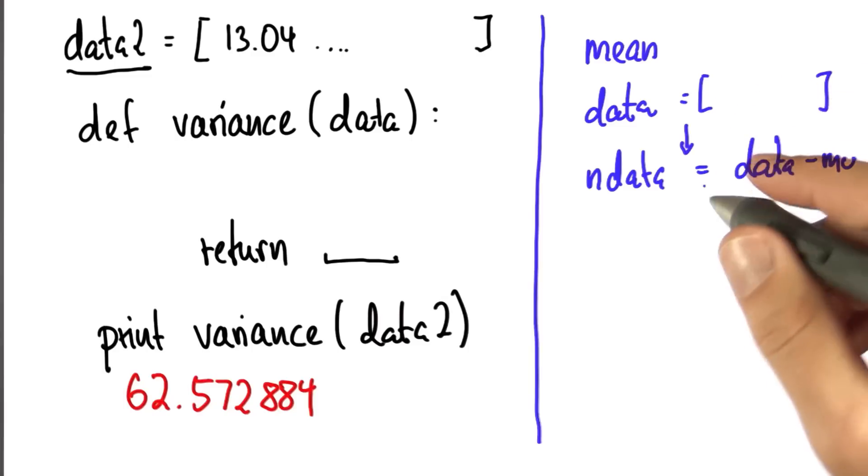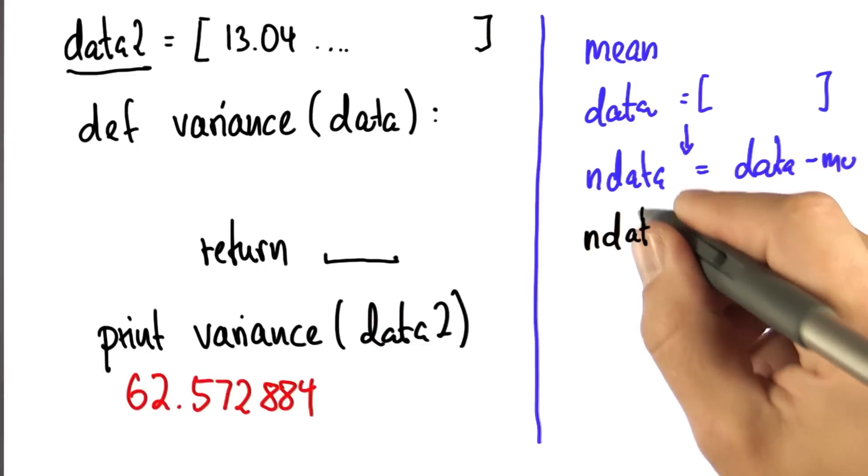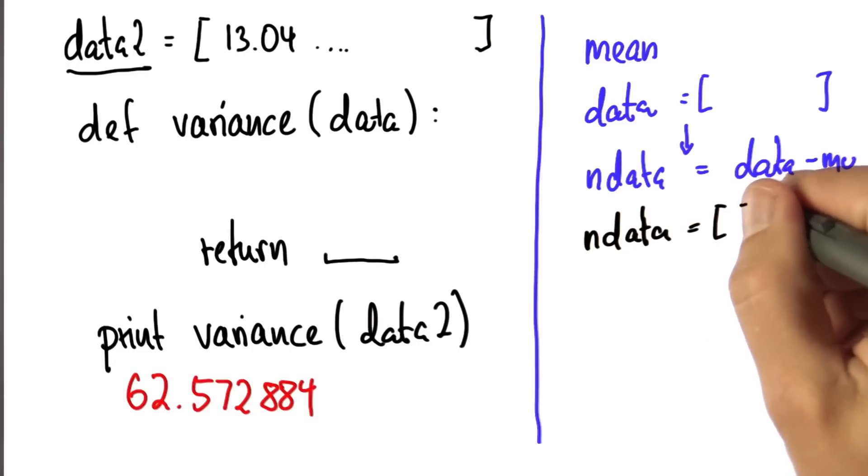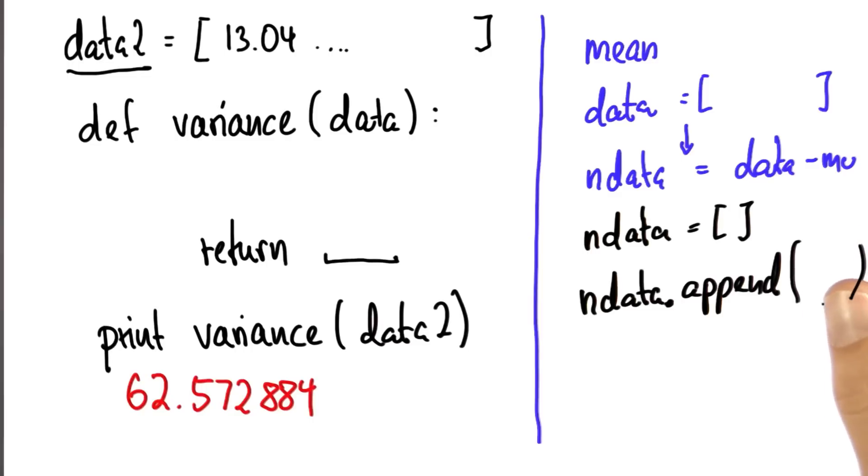And the subtraction is not entirely trivial to make the new data set. And the commands I've been using is I iteratively construct with a for loop the new data set. First, I set it to an empty list, and then there's this function called append, dot append. And whatever's inside the function, you've got to figure this out, will be appended to this list over here.